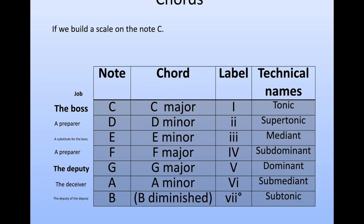If we build a scale on the note C — C, D, E, F, G, A, B — we've built a C major, a D minor, an E minor, an F major, a G major, an A minor, and a B diminished chord.